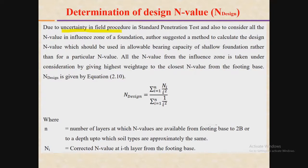As you know, there are many uncertainties in the field procedures of the Standard Penetration Test. When we perform the SPT in the field, due to field procedures the SPT N values may be affected differently from one layer to another. For this purpose, we find the weighted average of the SPT N values in the foundation influence zone, and this weighted average of N values is known as the design N value.